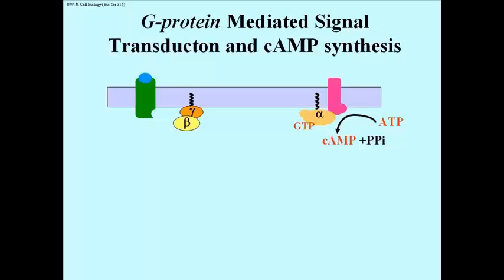Cyclic AMP is produced faster than it is degraded, as long as the hormone remains bound to the receptor, and the GTP bound alpha subunit of the G-protein remains bound to the adenylyl cyclase.